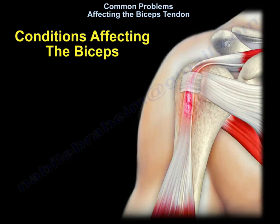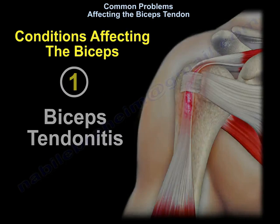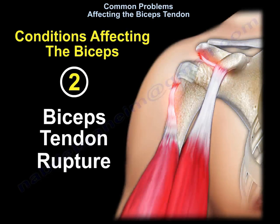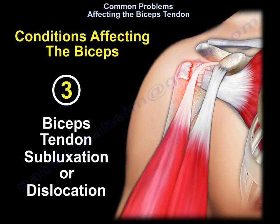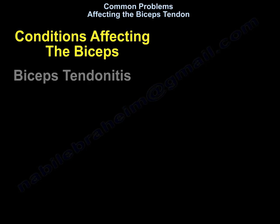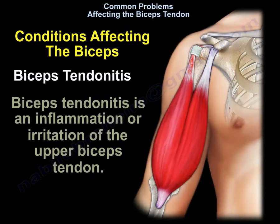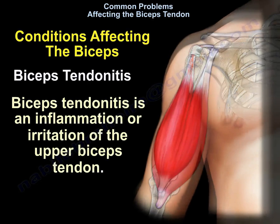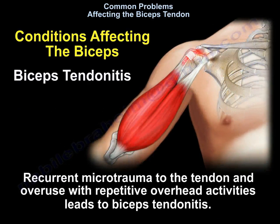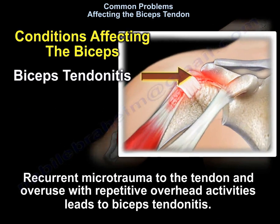What are the conditions affecting the biceps? Biceps tendonitis, biceps tendon rupture, and biceps tendon subluxation or dislocation. Biceps tendonitis is an inflammation or irritation of the upper biceps tendon. Recurrent microtrauma to the tendon and overuse with repetitive overhead activities lead to biceps tendonitis.